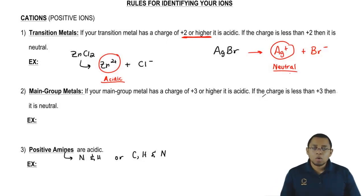For each of these rules that we're going to go over, if they meet the requirements of them, they could be acidic or basic. If they don't meet that requirement, that means they're automatically going to be neutral.